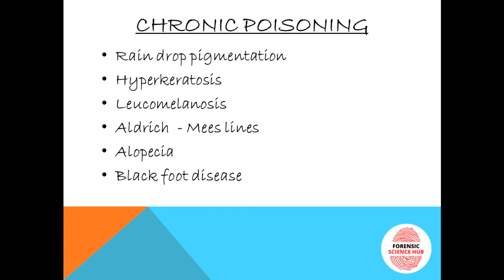In chronic arsenic poisoning there are six important symptoms. First is raindrop pigmentation, where brown-colored pigmentation is seen on the skin, particularly on the shoulders — since it appears as drops, it is called raindrop pigmentation. Second is hyperkeratosis, where increased amounts of keratin are deposited, particularly on the nails, causing excessive irregular thickening of the nails.